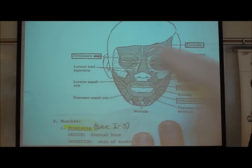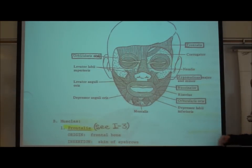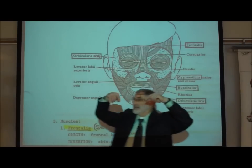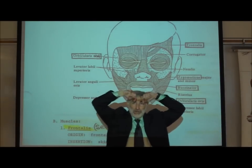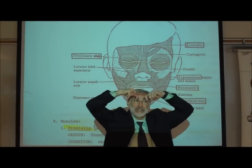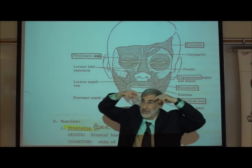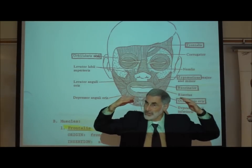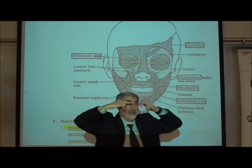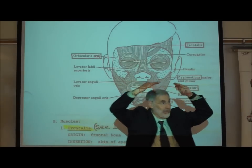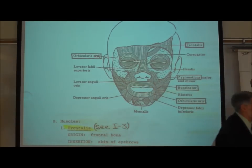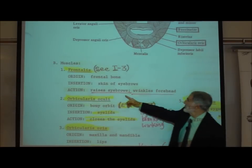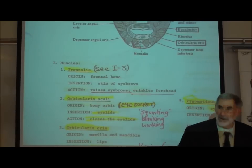The frontalis muscle is right here. Let's remember how muscles work: it originates on the frontal bone, inserts on the skin of the eyebrows. Every muscle pulls the insertion towards the origin, so it's going to raise your eyebrows upwards towards your upper forehead. The frontalis raises your eyebrows and in the process wrinkles your forehead.